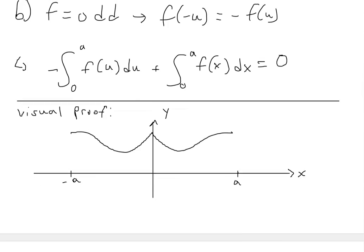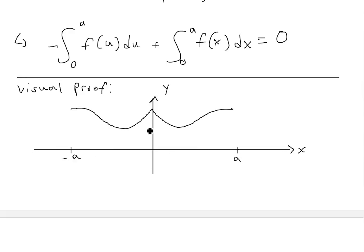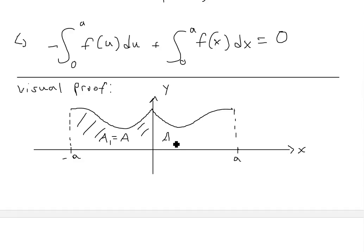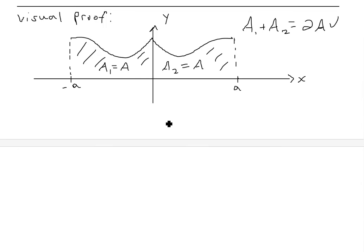For a visual proof: if we look at an even function, where f(x) equals f(negative x), it looks the same on both sides of the y-axis. Going from negative a to a, the area under the curve on the left side — call it A1 — equals the area on the right side — call it A2. Since it's symmetric, both equal A. So A1 plus A2 equals two times A, which matches the theorem.